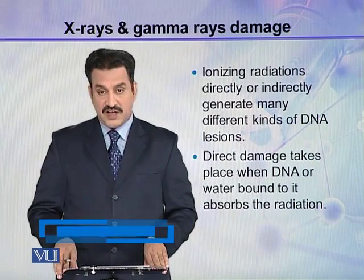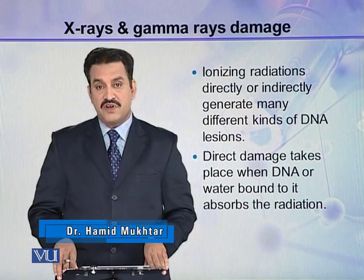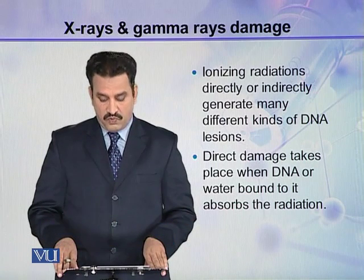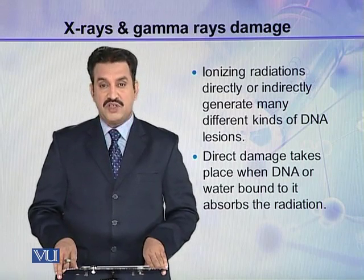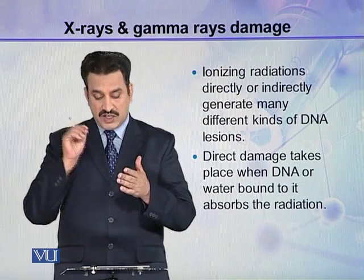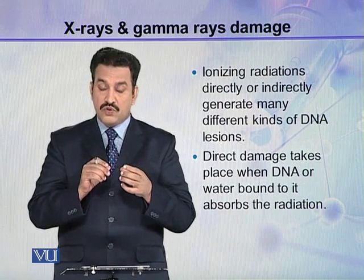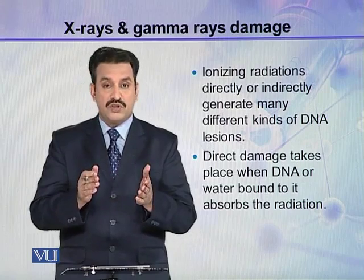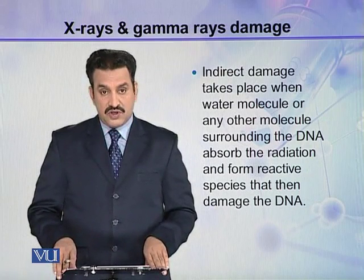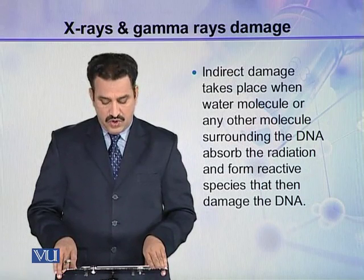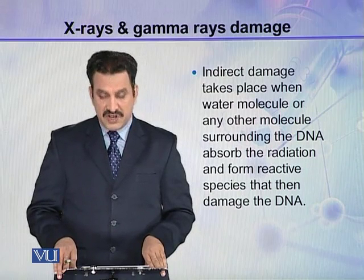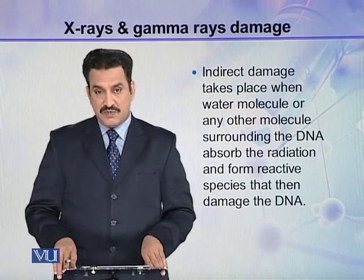Ionizing radiations directly or indirectly generate many different kinds of DNA lesions. Direct damage takes place when DNA or water bound to it absorbs the radiation — either the radiation strikes the DNA molecule or the water molecule bound to the DNA. In both cases, direct damage will take place. Indirect damage takes place when a water molecule or any other surrounding molecule absorbs the radiation and forms reactive species that then damage the DNA.